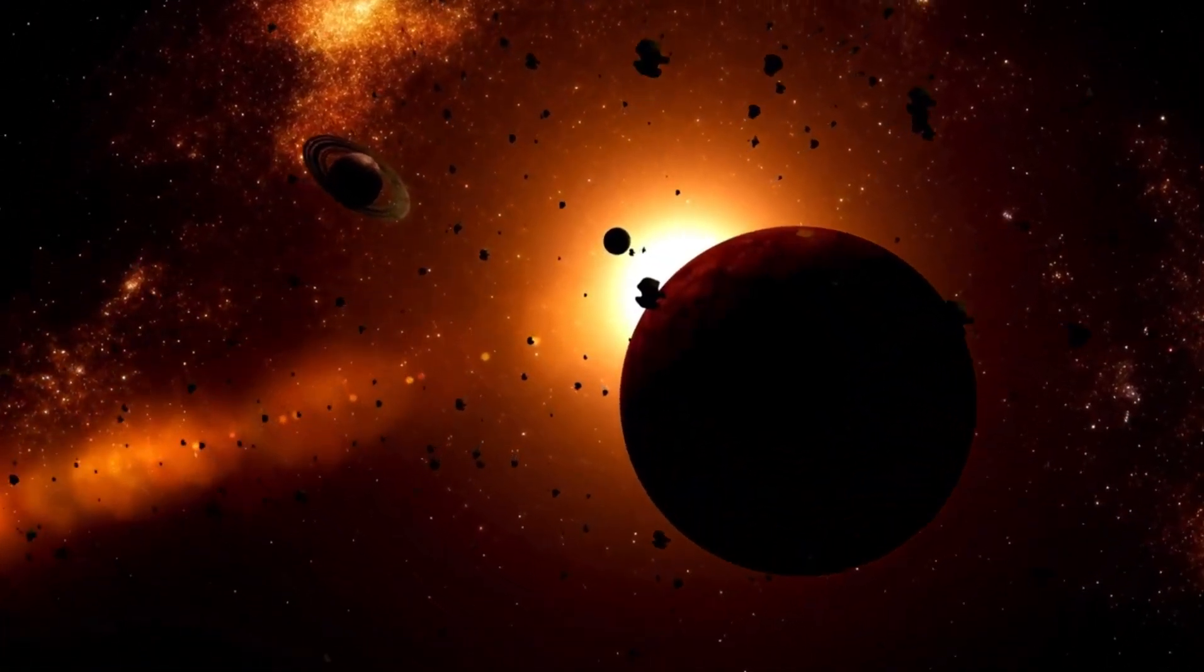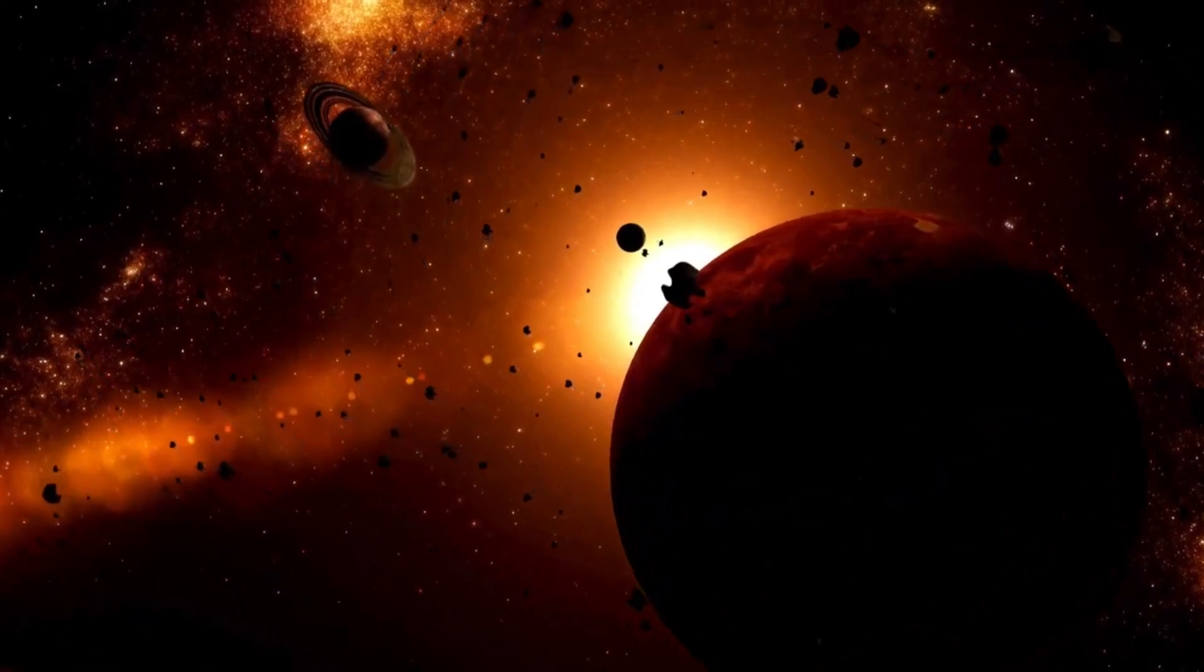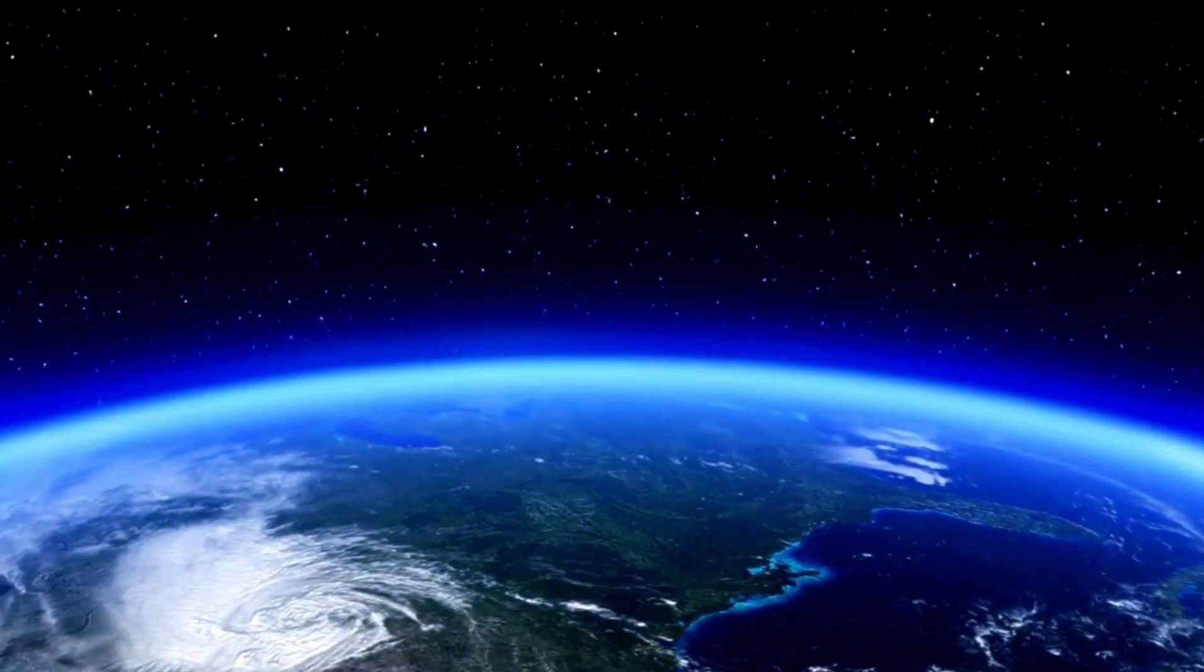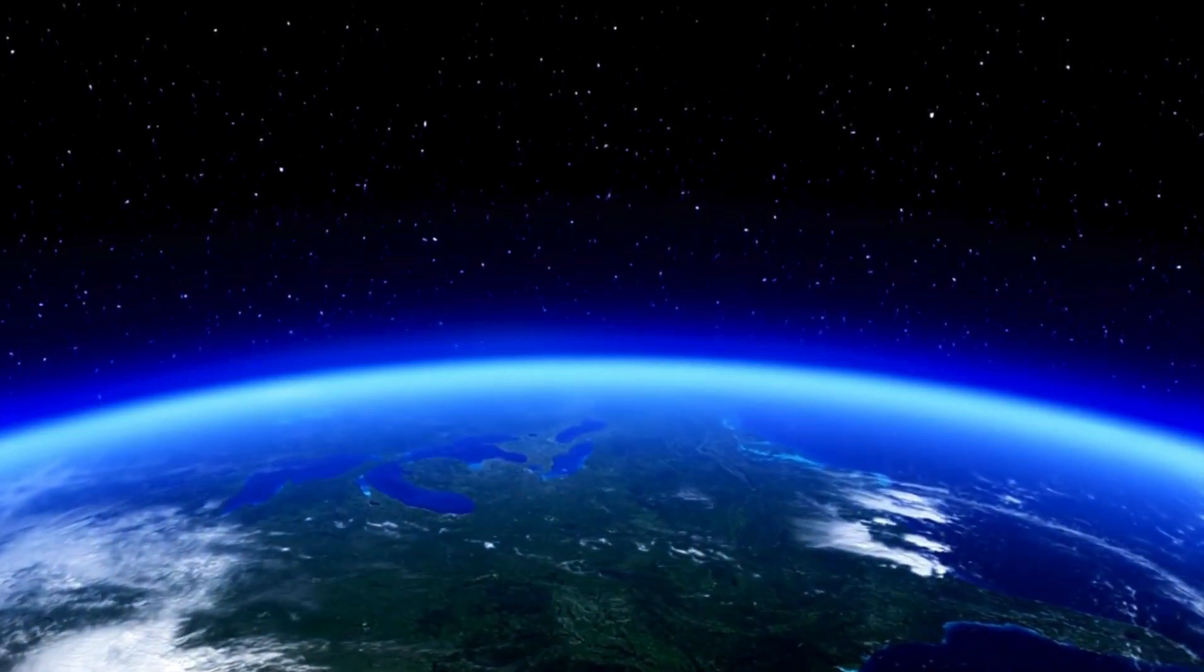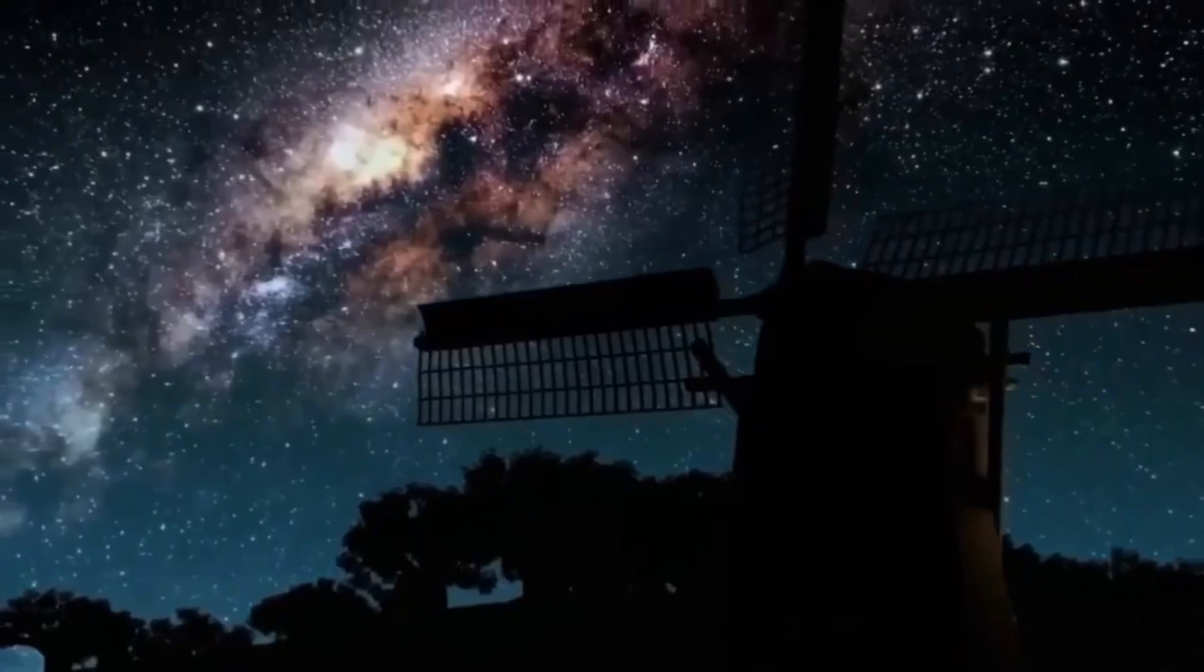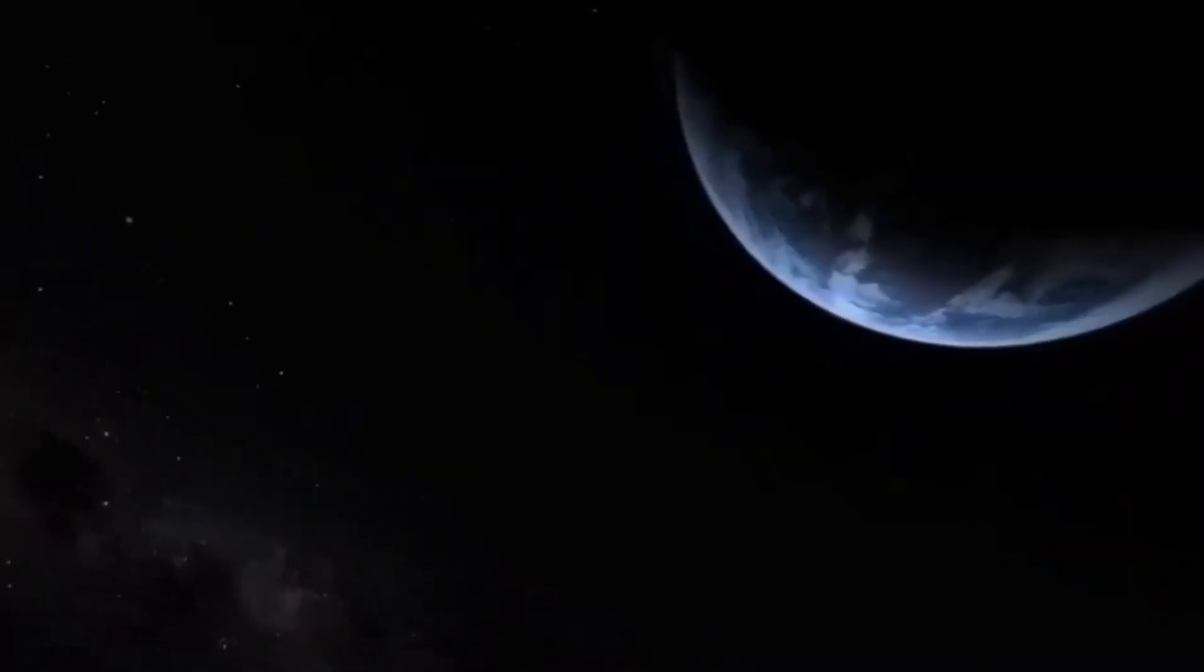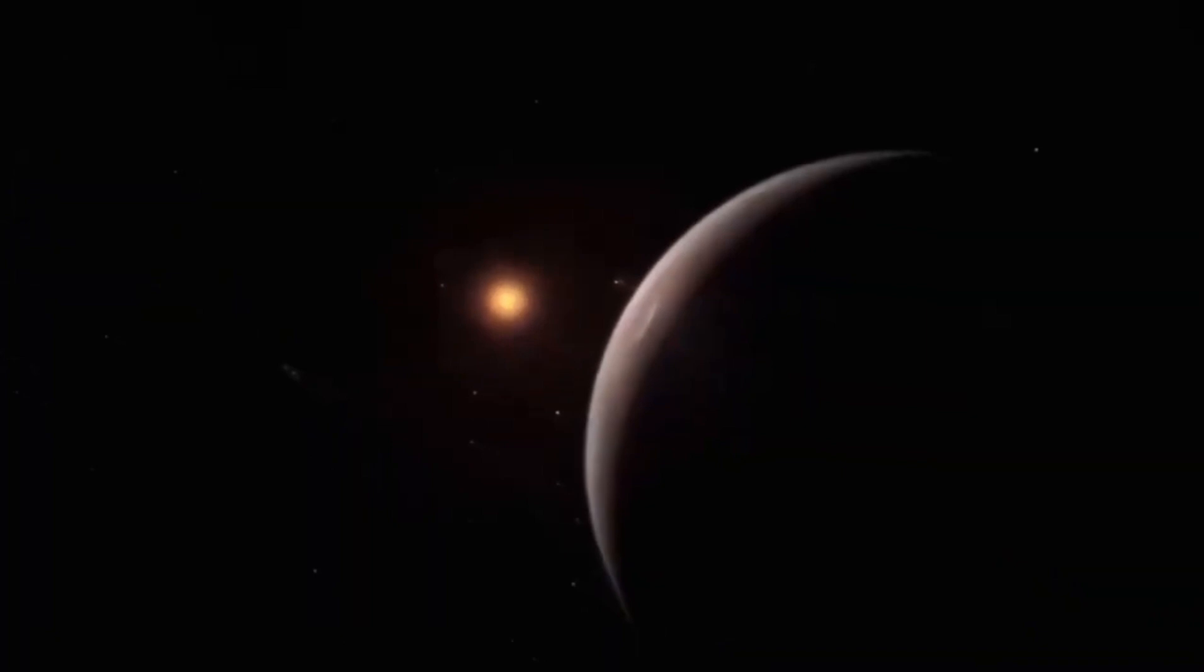But wait, there's something else. Proxima b isn't the only one in its orbit around the red dwarf star. It has a fellow traveler, Proxima Centauri c. Who can say what other secrets the star system holds? Maybe there's another companion that we have yet to discover. The mystery doesn't stop there.